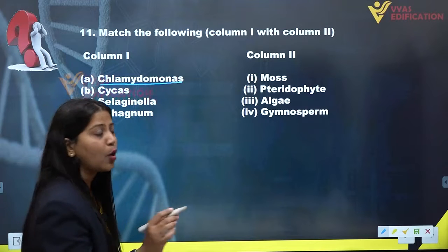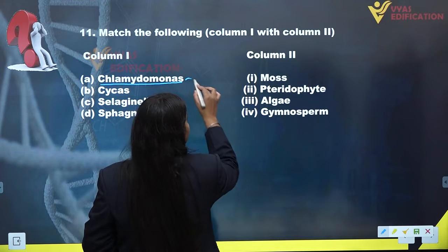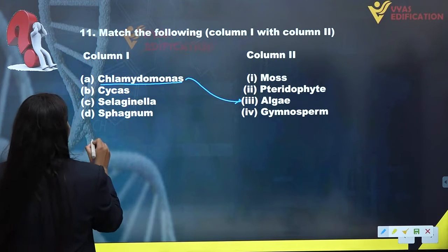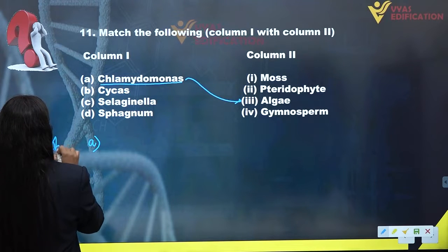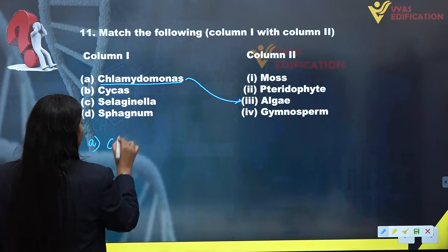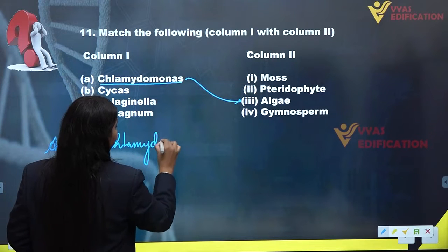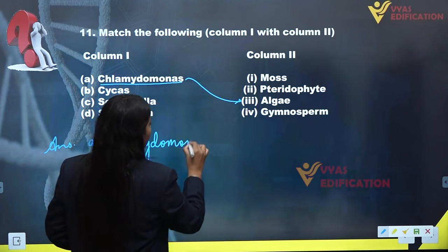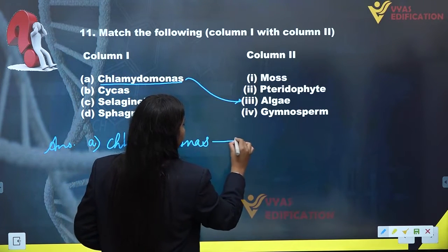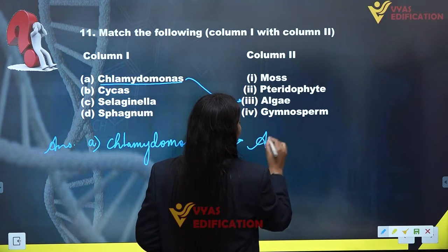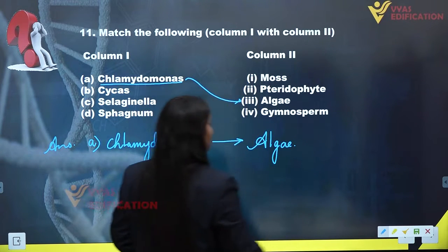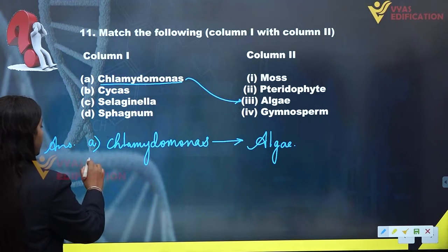We know that Chlamydomonas is a member of algae, so we will write here: answer A, Chlamydomonas belongs to algae.